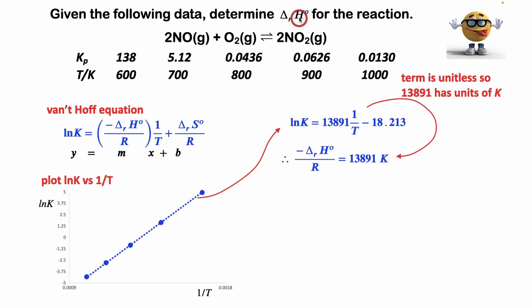Now, we want the standard change in enthalpy, so we'll multiply both sides by R and by negative 1 to get this. Kelvin cancels out, and we're left with negative 1.15 times 10 to the 5 joules per mole. We usually report these in kilojoules per mole.